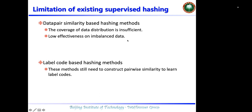Data pair similarity-based hashing methods need to define a similarity between data points to train hashing models, which leads to two issues. The first one is that the coverage of data distribution is insufficient, because these methods usually need to construct similarity matrices or triplets to train the hashing model.